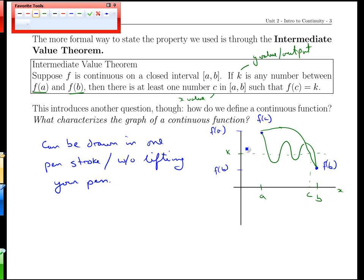And we can see here the connection back to the previous example. In our previous example, our a value was our birth, our b value is today. And we said, well, if our growth is continuous, and we believe it would be, then at some point we have to hit every point in between our birth height and our current height. We have to have some time where we'd cross any particular height in between.